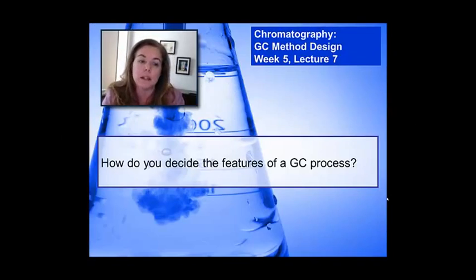What we're going to be talking about in this mini lecture is a very simple question: how do you decide the features of a GC process? We've talked a lot about flow rate earlier in the week as one parameter to manipulate and improve resolution, but what about things related specifically to the column selection? Many features of the column selection play a huge role in how good the separation is going to be.